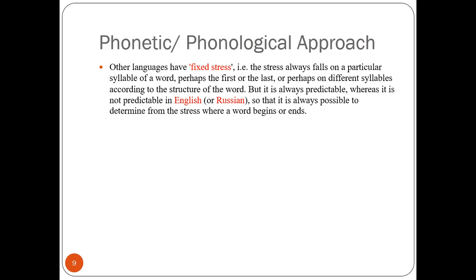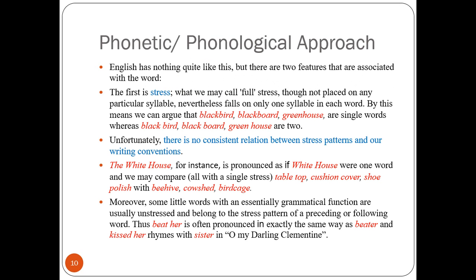In English, stress is not predictable — sometimes it falls on the first syllable, sometimes in the middle, and sometimes on the last syllable. In speech it can be difficult to identify where a word begins. So stress cannot be taken as a criterion to distinguish one word from another. It is only possible to determine word boundaries from stress in those languages where stress placement is predictable.